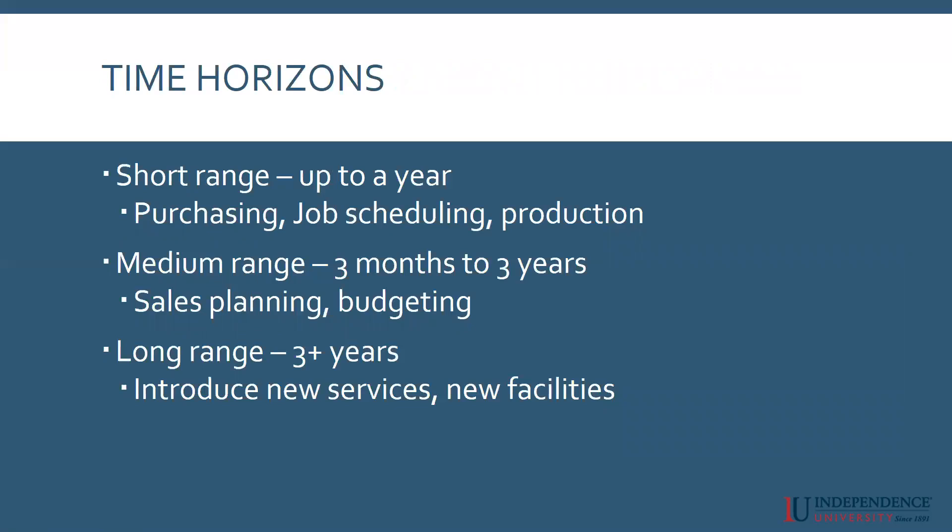Forecasting is done in some kind of time horizon — these are very common. Some forecasts are what we call short range: a forecast that's good up to a year. You might sit down and figure out your budget for the year. Purchasing departments use this a lot because they need to schedule out when they're going to be purchasing things. You don't want to be buying things for your company if you don't have money in the bank.